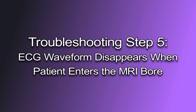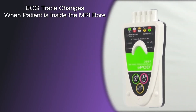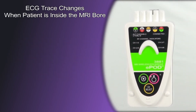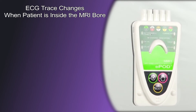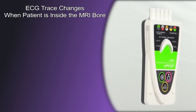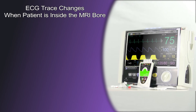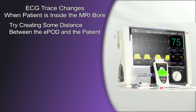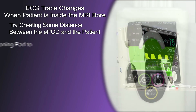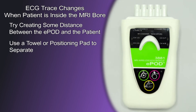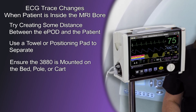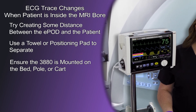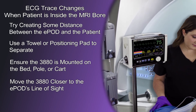Troubleshooting Step 5: ECG waveform disappears when patient enters the MRI bore. It is possible that certain MRI systems can disrupt the wireless signal between the ePod and the 3880, causing enough signal delay that the ECG trace will not be displayed. Some human bodies can absorb RF, so try creating some distance between the ePod and the patient — use a towel or positioning pad to separate. Ensure the 3880 is mounted on the bed, pole, or cart, and move it closer to the ePod's line of sight.